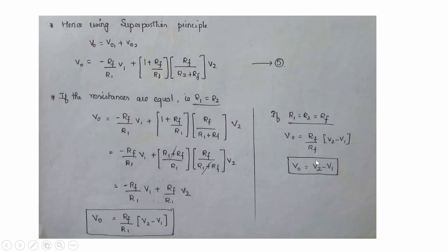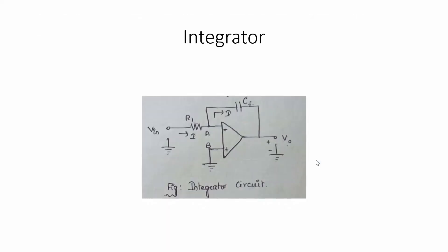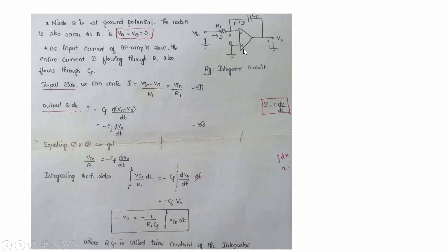Next is the integrator circuit, where the output voltage integrates the input voltage. A capacitor Cf is used as the feedback element, and R1 is on the input side. Nodes A and B are the voltages at the inverting and non-inverting terminals respectively. Vin is applied to the inverting terminal. Applying virtual ground: Vb = 0 and therefore Va = 0.